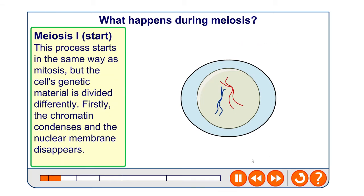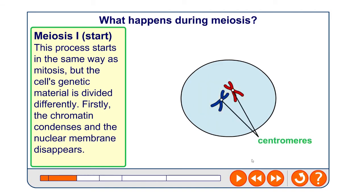In meiosis one, the process starts the same as mitosis but the cell's genetic material gets divided up in a different way. As you would expect, the chromatin condenses, the nuclear membrane disappears, and the chromatids are joined at their centromeres. If you're unsure of any of these keywords, it's worth revising mitosis because there's a lot of overlap.